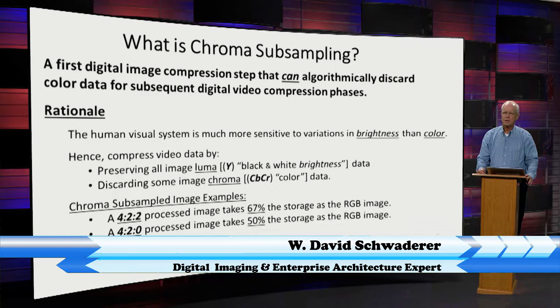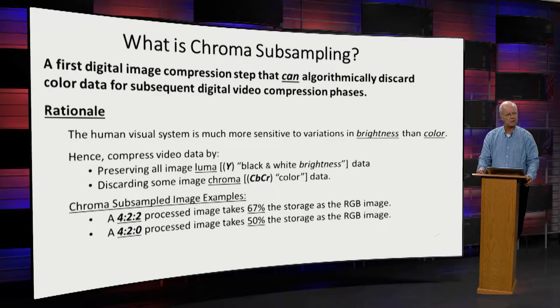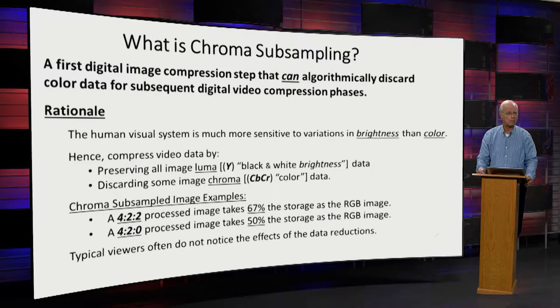Don't be scared. Here are a couple of chroma subsampling examples: a 4-2-2 chroma subsample and a 4-2-0 chroma subsample. 4-2-2 leaves about 67% of the original image information, and 4-2-0 leaves about 50%. What's nice about it is that viewers typically don't notice that it's missing, so you can reduce the amount of data transmitted or stored without materially affecting the actual images.